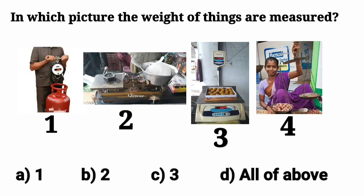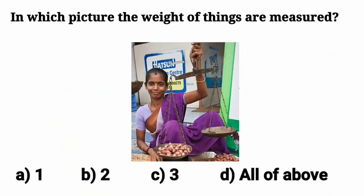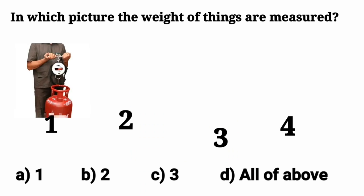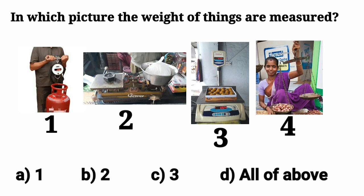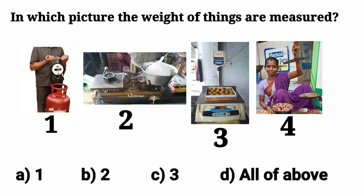And in the fourth picture, what do you see there? A lady is weighing vegetables on a balanced scale. Kids, now we are clear that in all the four pictures, different items are weighed using weighing machine or balanced scale.